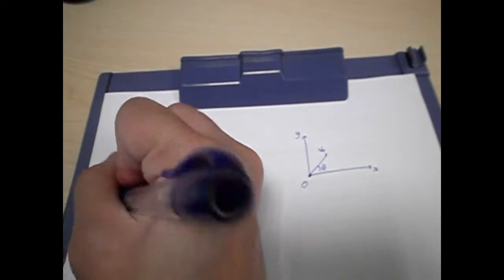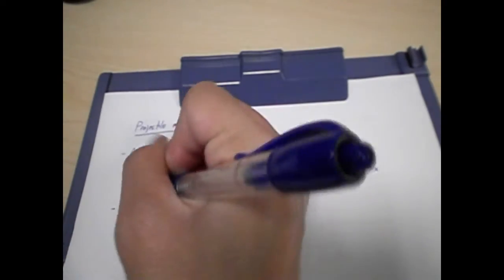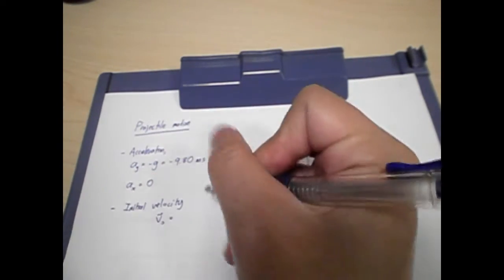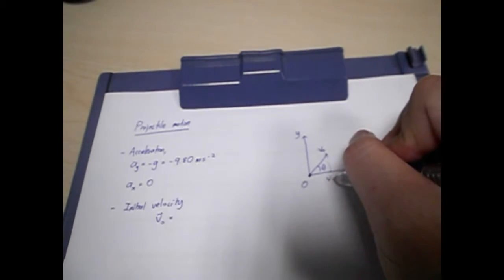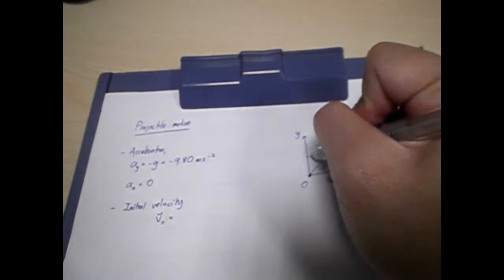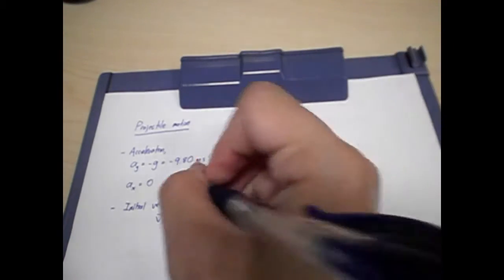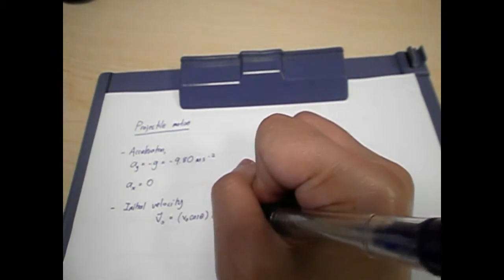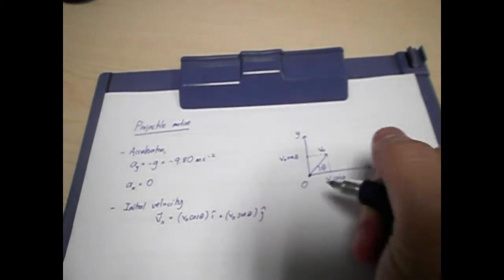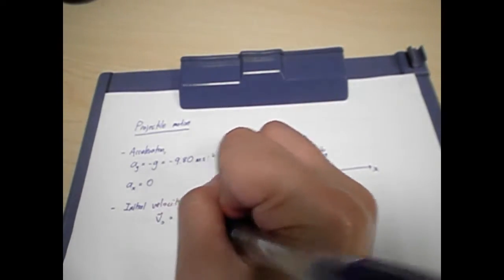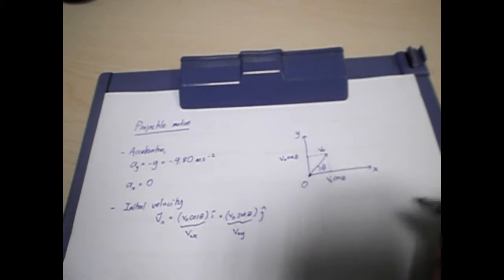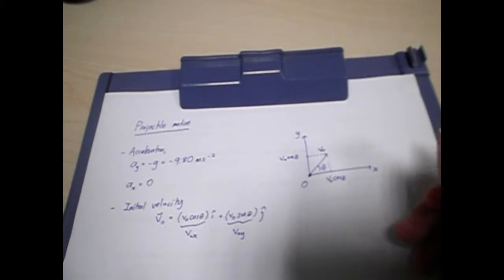With this initial condition, the initial velocity can be written in vector form, having a horizontal and vertical component. The horizontal component is V cos theta, and the vertical component of the velocity is V sin theta. So in vector form, we write V cos theta in the i-direction and V sin theta in the j-direction. We call these V0x and V0y, both representing initial velocities. The velocities will change throughout the motion.